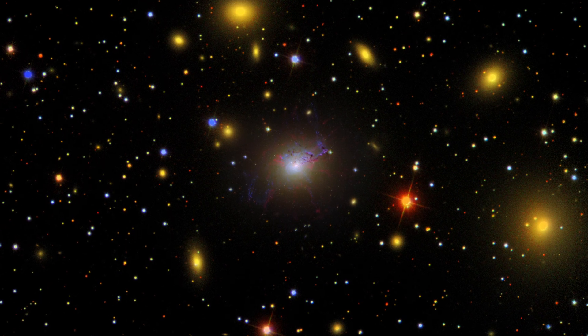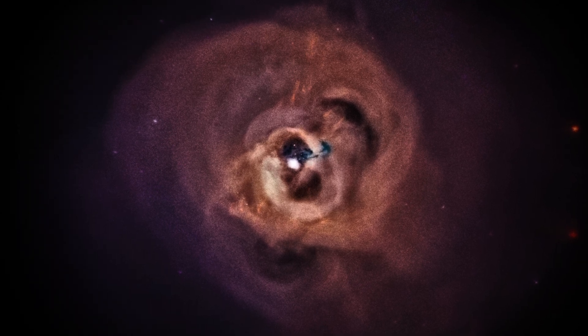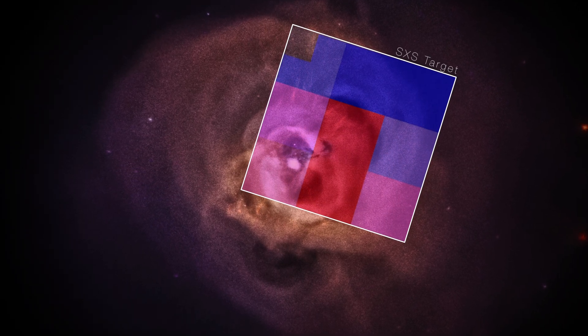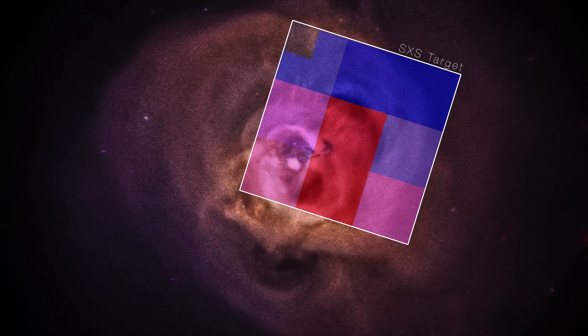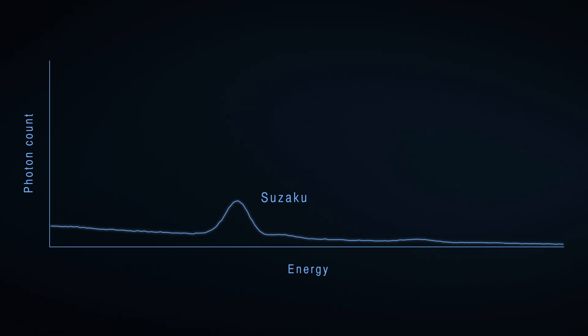This multi-million degree gas makes the Perseus Galaxy Cluster the brightest in the sky when seen in X-rays. But until now, details about the motion of this gas were out of reach. Here's the best previous spectrum of the cluster from Japan's Suzaku mission.